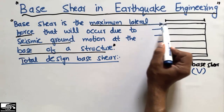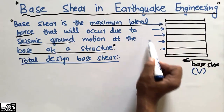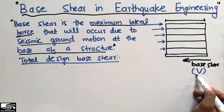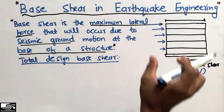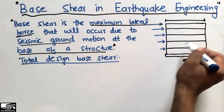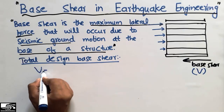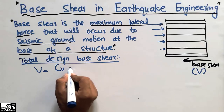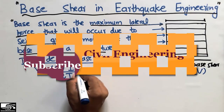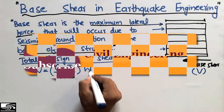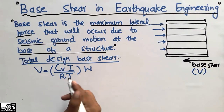The maximum lateral force is applied at the top of the building, which experiences the greatest force, then decreasing downward. The summation of all story forces equals the base shear. The total design base shear formula is: V = (CV · I) / (R · T) × W.